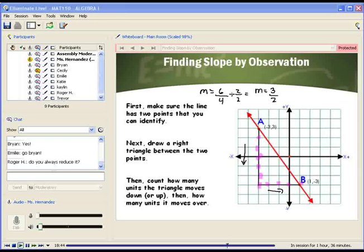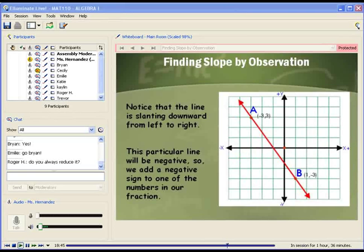Now did you also notice that the slope is slanting down from left to right? Give me a happy face if you saw that. Good. Now this one happens to be negative so we're going to add a negative sign to our fraction to show that the line is slanting downward from left to right, so be aware of that.